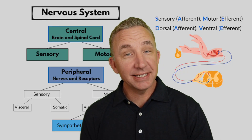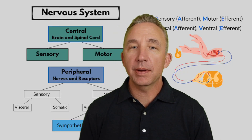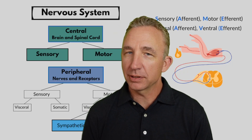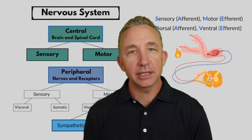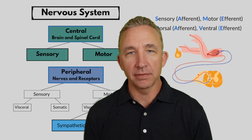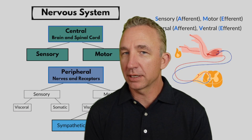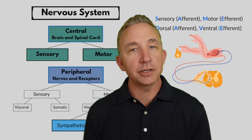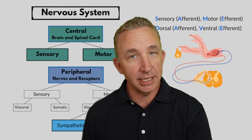We're covering some of the basics of the nervous system. Remember, there are four types of tissue in the body: epithelial, connective, muscle, and nervous. I've done a few videos on the muscular system, and now we're moving on to the nervous system and special senses.